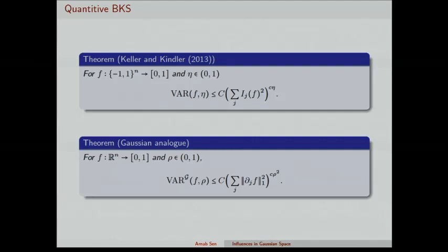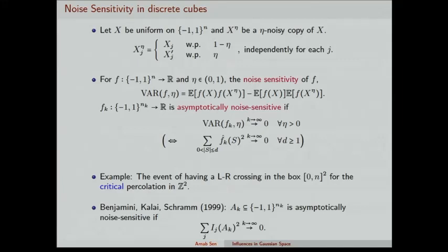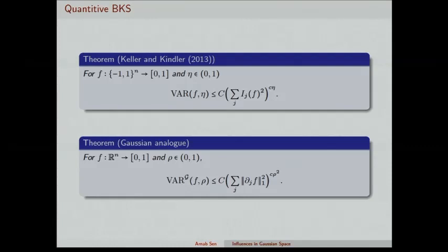One can prove a quantitative version of this theorem. The original BKS theorem is qualitative — it only says that if one quantity goes to zero, another goes to zero. Keller and Kindler proved a quantitative version: the noise sensitivity function is bounded by some function of the sum of the squares of the influences to the power of a constant times η, where the constants are universal.